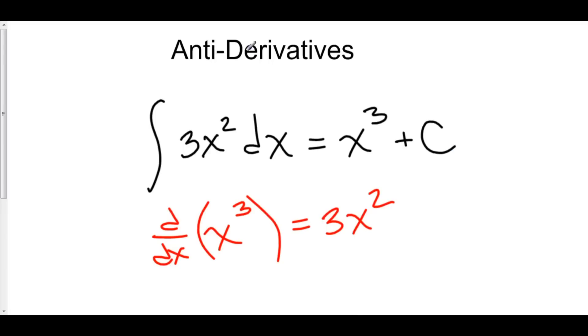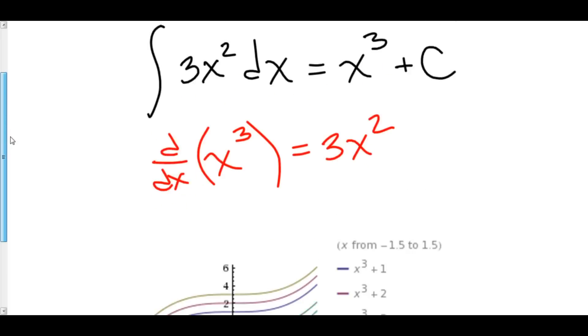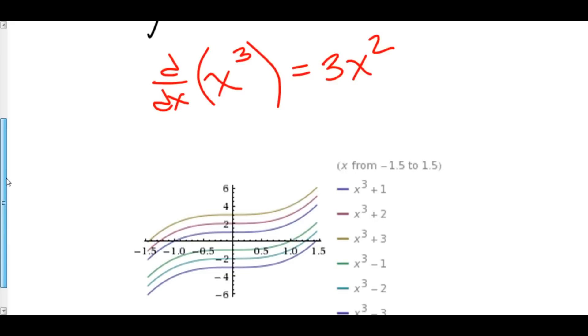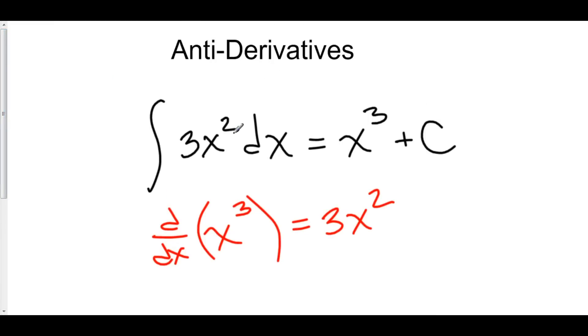So, the family of antiderivatives of 3x squared is given by x cubed plus C. If you want to graph this, you'll note that here lies the family of antiderivatives. x cubed plus 1 is right here. Here's x cubed plus 2. x cubed plus 3. This goes on forever. Every single one of these functions, when you take the derivative of it, will give you 3x squared. And that is why the antiderivative of 3x squared is a family of x cubed plus C.